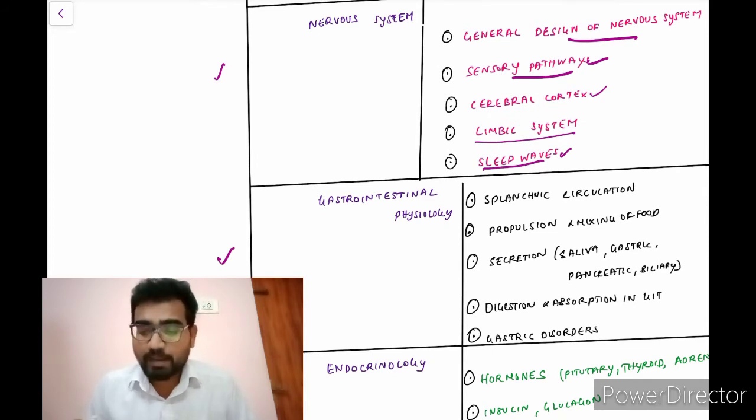GIT. GIT is splanchnic circulations, propulsion and mixing of food. And then the secretions, salivary secretions, gastric secretions, pancreatic secretions, and bile secretions. And then the digestion and absorption in the GIT. And a few gastric disorders.